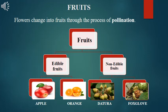Some flowers change into fruits through a process of pollination. Fruits are mainly classified into edible fruits — for example, apples and oranges — and non-edible fruits — for example, datura and foxglove.